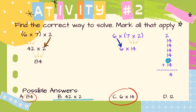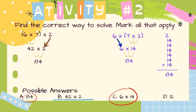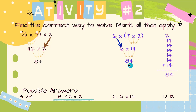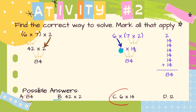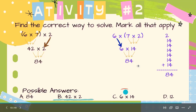We're done with Activity number 2. We have 3 possible answers: 84, 42 times 2, and 6 times 14. Yay!